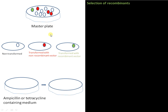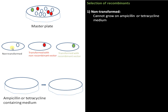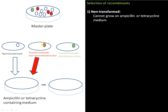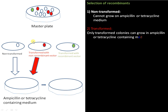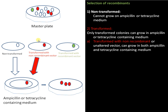We start with a master plate containing all the colonies, and we need to find which colony contains our gene of interest. Non-transformed bacteria cannot grow on ampicillin or tetracycline medium because the vector has not been introduced and they lack innate resistance. Transformed with non-recombinant vector — this vector has both ampicillin and tetracycline resistance genes, so these colonies can grow on both media.